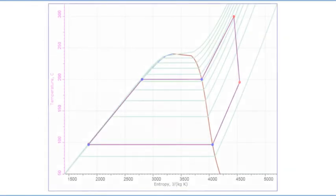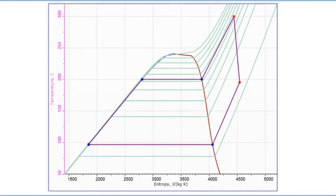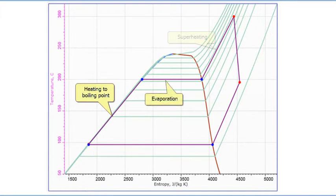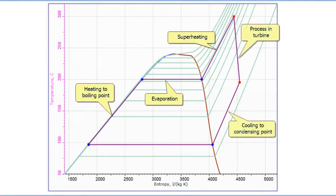The process plotted on a temperature versus enthalpy diagram shows the main parts of the Rankine cycle: heating up to boiling point, evaporating to vapor state, superheating, the process in the turbine, cooling to condensing temperature, and condensing to liquid state to start a new cycle.